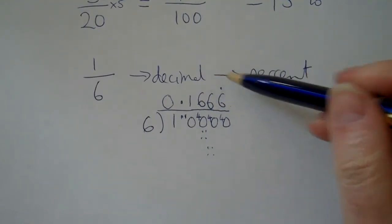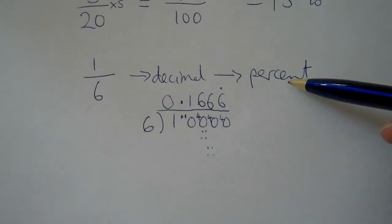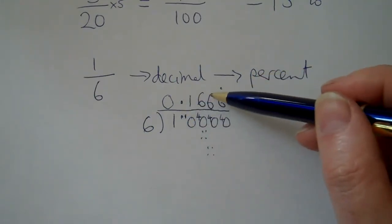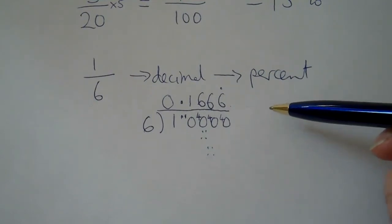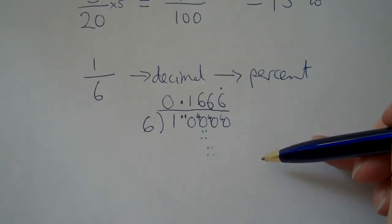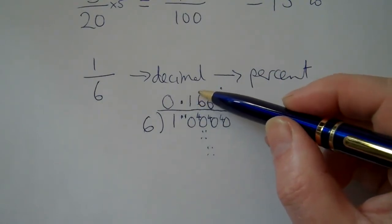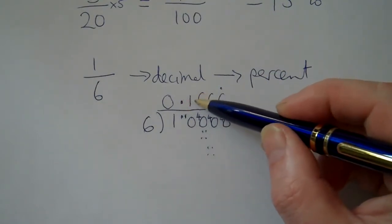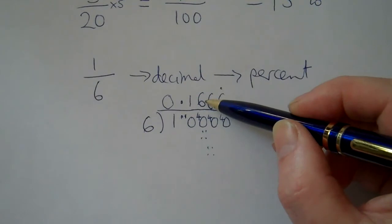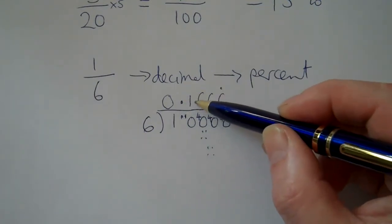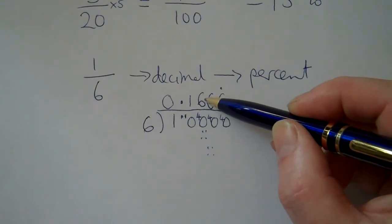How do we turn that into a percent? Well, that's actually pretty simple because we just need to multiply it by a hundred and that will give us the percentage number. To multiply any decimal by a hundred, you have to move the decimal point two places to the right. One place to the right would be times ten, two places is by a hundred, three places would be times a thousand and so on.